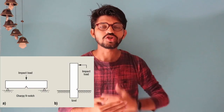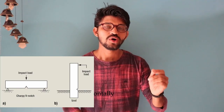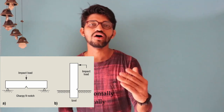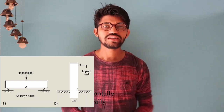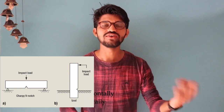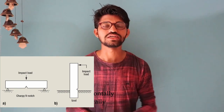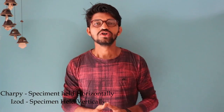In the Charpy Impact Test, the specimen is held horizontally such that the notch is facing on the opposite side of the striking hammer. In the IZOD Impact Test the specimen is held vertically, but in the Charpy Impact Test the specimen is held horizontally. That is the basic difference between the IZOD and the Charpy Impact Test.